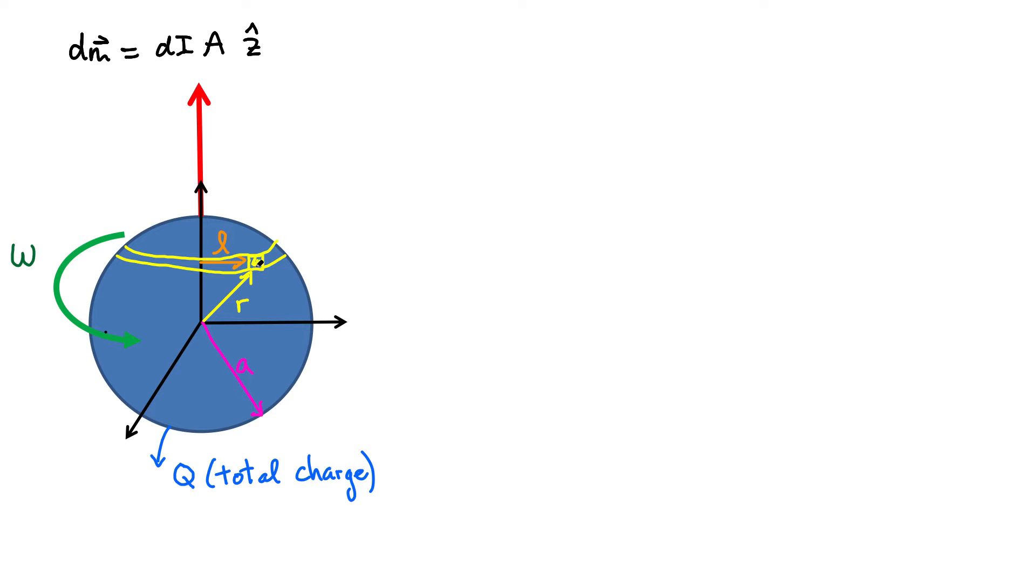Because depending if the small volume that I'm going to look at of charge is closer to the axis or right out on the surface, it generates a different amount of current and produces a different area for that specific current loop. So now we're going to add them all up together. Let's look at each term.